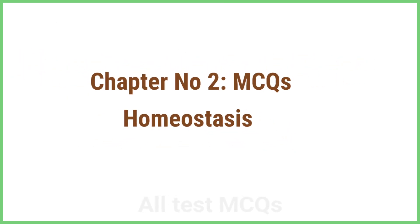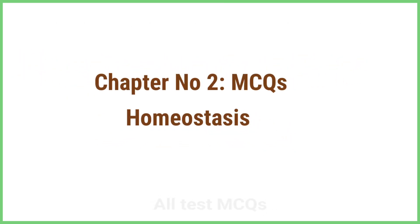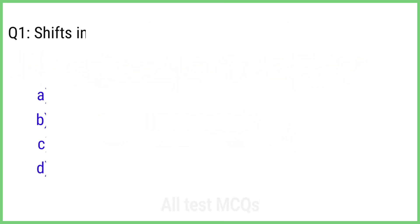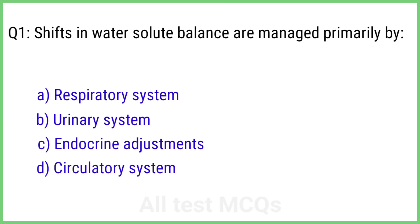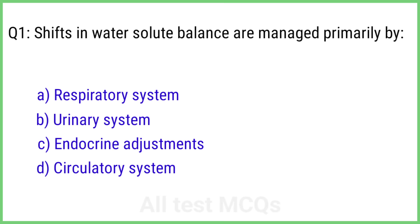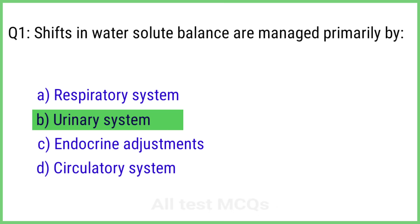Chapter 2: Homeostasis. Question 1. Shifts in water and solute balance are managed primarily by? The right answer is option B: Urinary system.